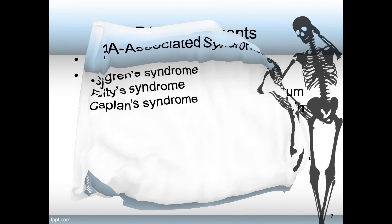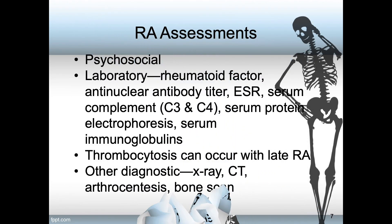Your assessment should include a psychosocial check, because your patient who is in chronic pain and losing their health may be suffering from depression or anxiety. Laboratory assessments should include checking rheumatoid factor, anti-nuclear antibody titer, ESR, serum complement (that is, C3 and C4), serum protein electrophoresis, and serum immunoglobulins. Remember that thrombocytosis can occur with late RA.